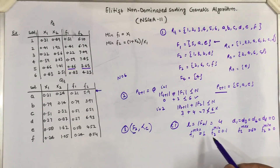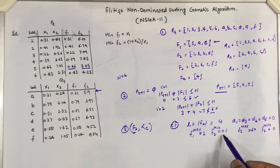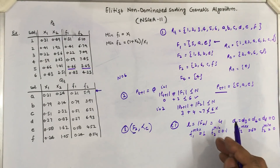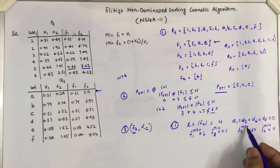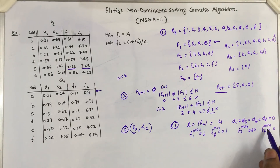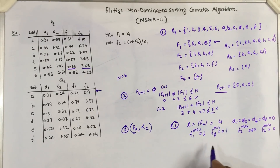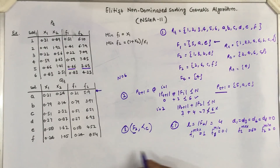For our example, for F1 we take 1 as the maximum value and 0.1 as the minimum value, and for F2 the maximum value is 60 and the minimum value is 0.